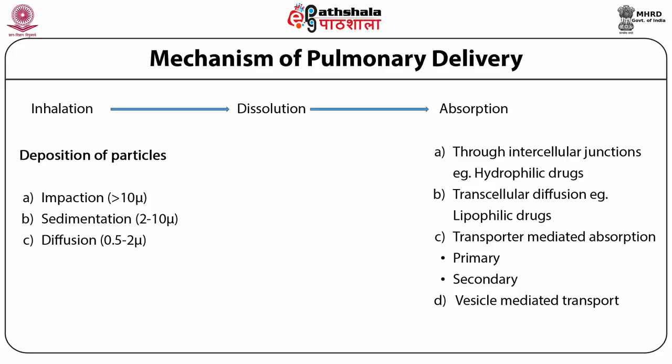Another mechanism of transport is vesicular transport, also known as transcytosis. Transcytosis involves endocytosis and exocytosis, responsible for the movement of molecules in and out of cells. This mechanism is of particular interest for the transport of xenobiotics, proteins, and peptides. These vesicular conduits are formed in the airways and alveolar region — for example, clathrin-, caveolin-, and flotillin-mediated endocytosis.